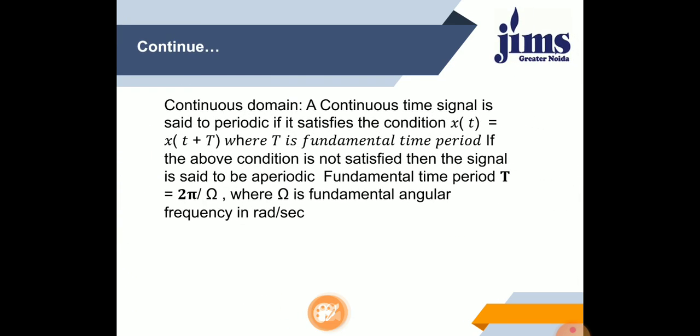Next is the concept of periodic signals in the continuous domain. A continuous time signal is said to be periodic if it satisfies the condition x(t) = x(t + T), where T is the fundamental time period. If this condition is not satisfied, then the signal is said to be aperiodic. The fundamental time period T equals 2π divided by ω, where ω is the fundamental angular frequency in radians per second. Signals that do not hold the mathematical condition x(t) = x(t + T) are called non-periodic signals.